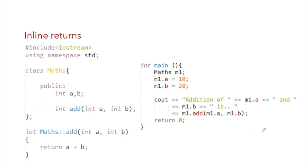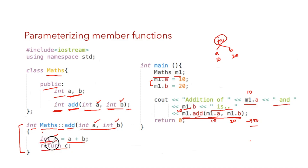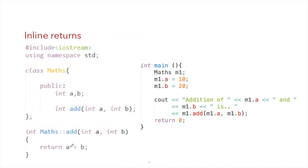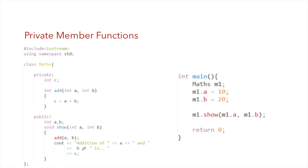The previous example created an extra variable 'int c = a + b' and then returned c. Instead, we can use an inline return — writing 'return a + b' directly. This avoids creating an unnecessary variable. You can use any formula or even another function call in inline returns — it's a useful technique that reduces the number of variables needed in your code.